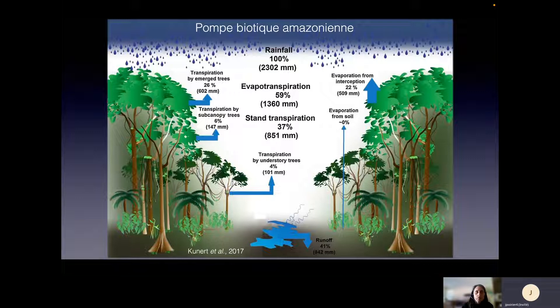C'est là que ça a été étudié le plus parce que c'est une forêt absolument exceptionnelle qui a beaucoup d'attributs et une grande diversité. Il y a des arbres à tous les étages, un peu comme chez nous avec nos érablières, nos forêts mixtes, où on a des forêts qui peuvent en structure et en composition ressembler un peu aux forêts amazoniennes, mais sans avoir la grande diversité d'espèces qu'on peut y voir.